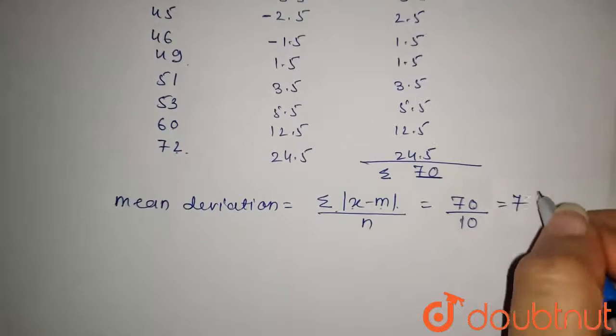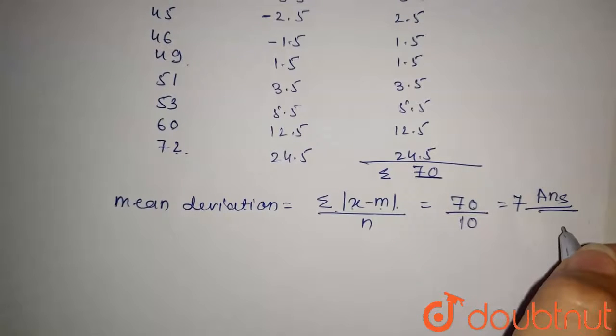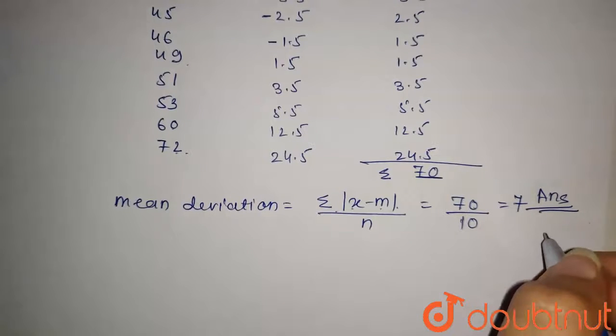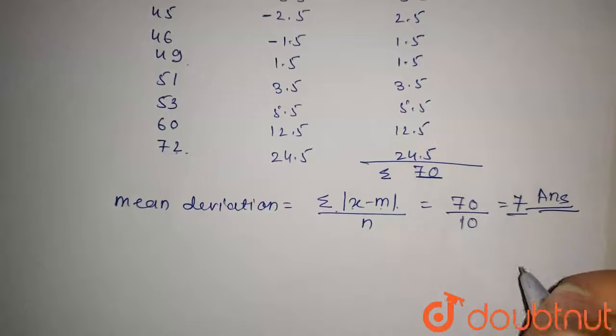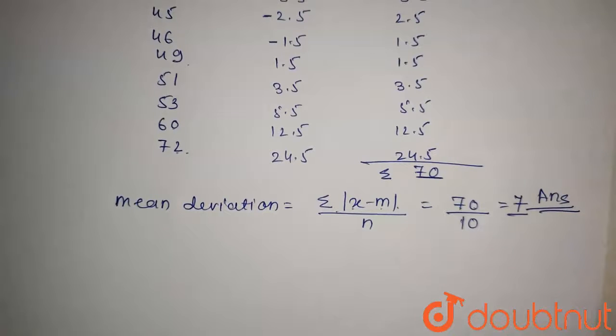So the answer of this question is 7. That is the mean deviation about the median for this data is 7. So this is the answer of this question. Thanks for watching.